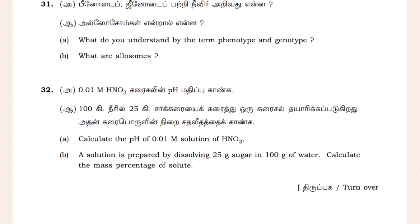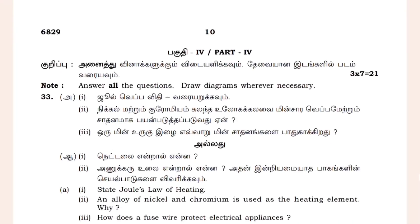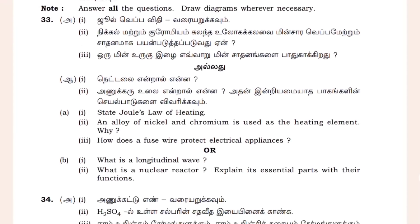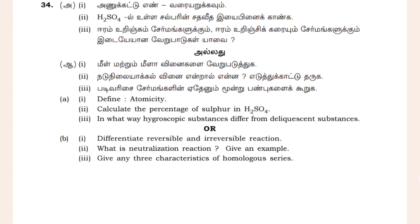State Joule's law of heating. An alloy of nickel and chromium is used as a heating element. How does a fuse wire protect electronic applications? Appliances are rated 23–30 or 24–30.